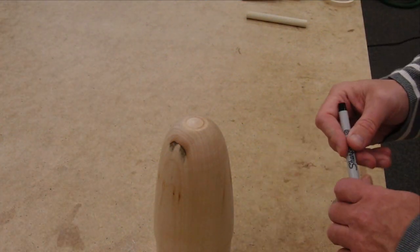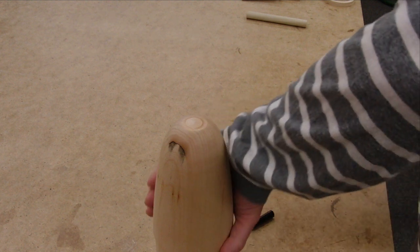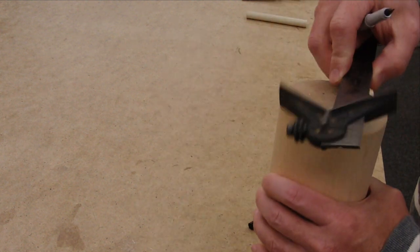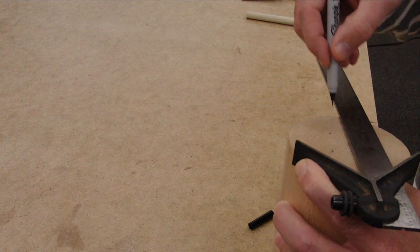Before we do anything else, we're going to mark a line on the bottom bisecting the base of the plug. This will help us when we're registering it with the base plate.